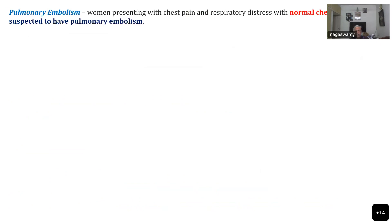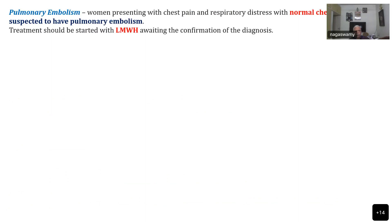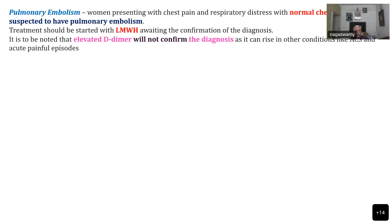The third problem is pulmonary embolism. A patient presenting with chest pain and respiratory distress with a normal chest x-ray — if the features of acute chest syndrome are not present — may have pulmonary embolism. The treatment is to start low molecular weight heparin as early as possible. D-dimer for diagnosis will not be elevated in this condition, so it is a question of clinical diagnosis.